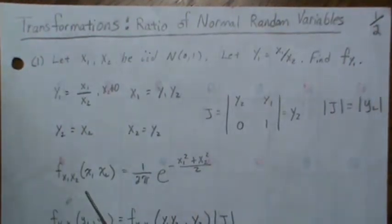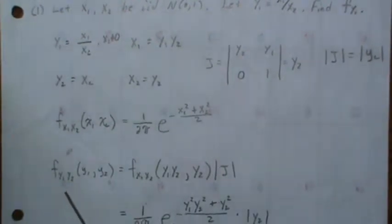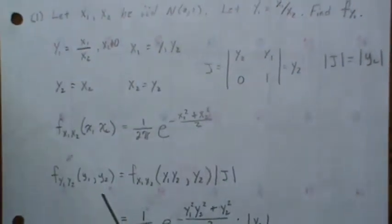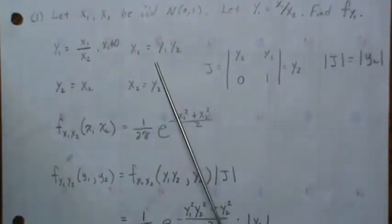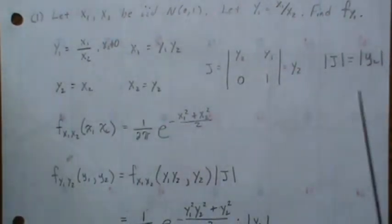Since X1 and X2 are independent, it's the product of their densities, which is this—they're standard normal. The joint distribution of Y1 and Y2 is this, where this is the density of X1 and X2, but we plug in these quantities here.